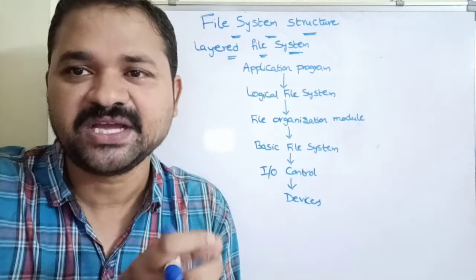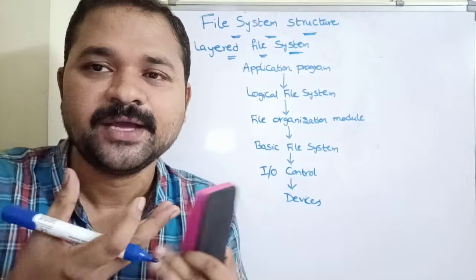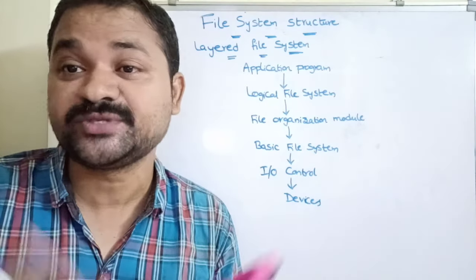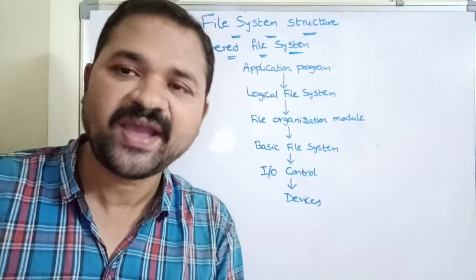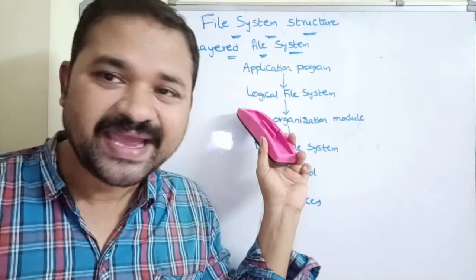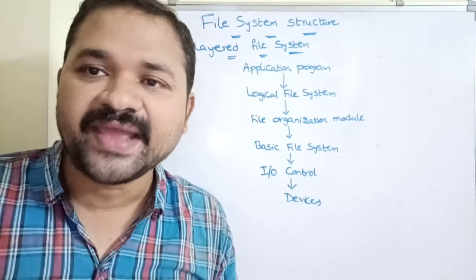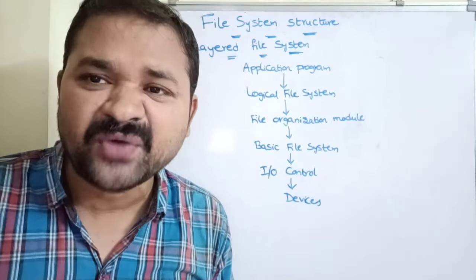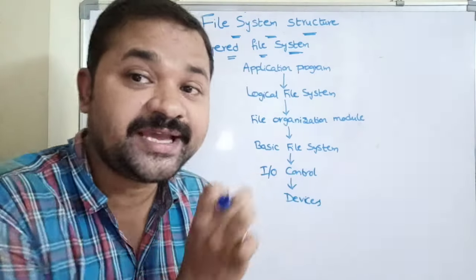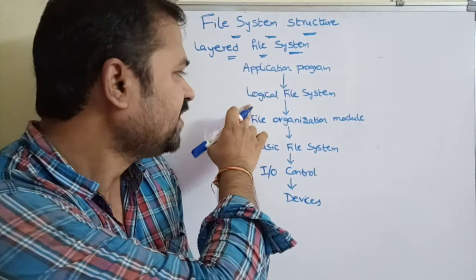We have a logical block number as well as a physical block number. The logical block number corresponds to the file — which block we are accessing, whether it is the first block, second block, or third block. The physical block number specifies the exact block number where the file is stored on the hard disk. The logical file system accepts a file name as input and finds the location and logical block number of that file, which is why it is named the logical file system.